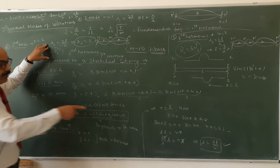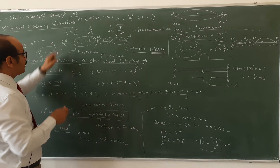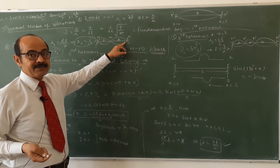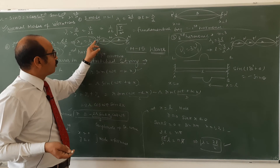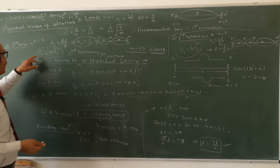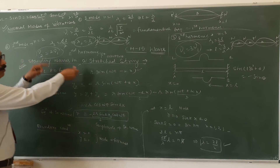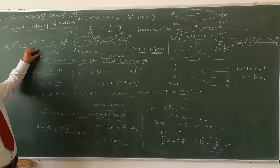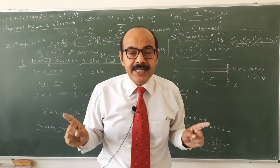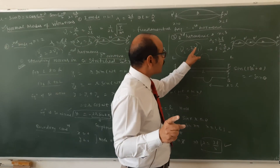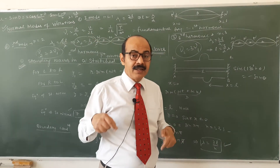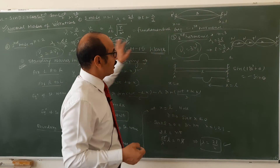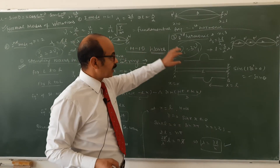Second mode के लिए n = 2 लिखेंगे, तो λ₂ = 2L/2 = L. इसका मतलब second mode में entire length of string में complete wave बनेगी. Node, node, node, और बीच में antinode. Frequency: ν₂ = 2ν₁ — this is called second harmonic और first overtone. इस तरह second mode में frequency fundamental frequency का twice होगा, third mode में thrice होगा, fourth mode में four times होगा. जो fundamental frequency होती है उसी के integral multiples further frequencies होते हैं — second harmonic, third harmonic, fourth harmonic, first overtone, second overtone.